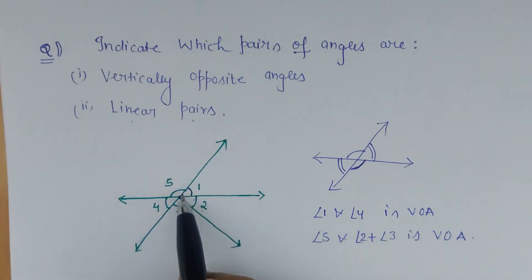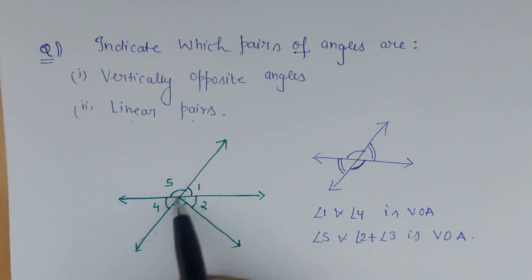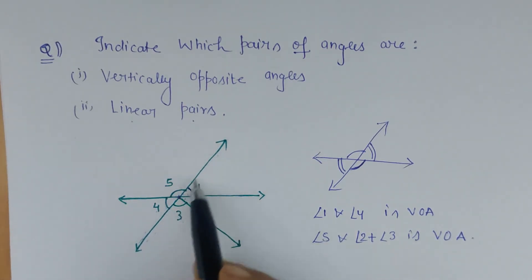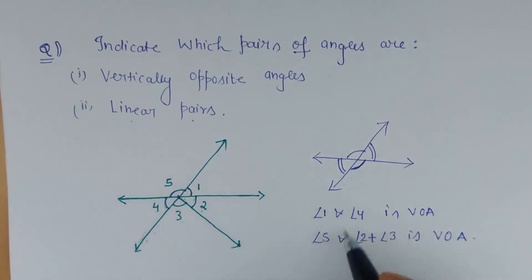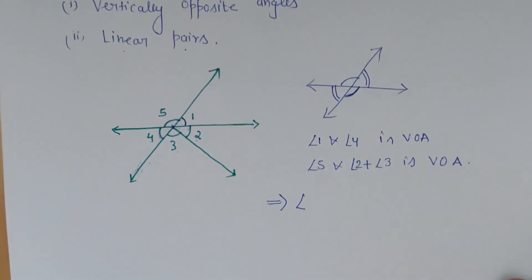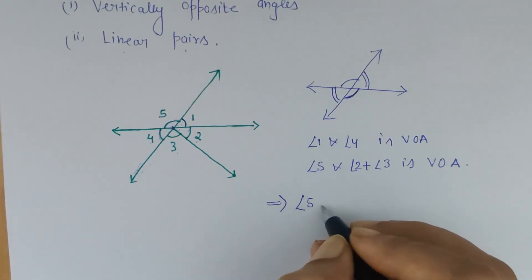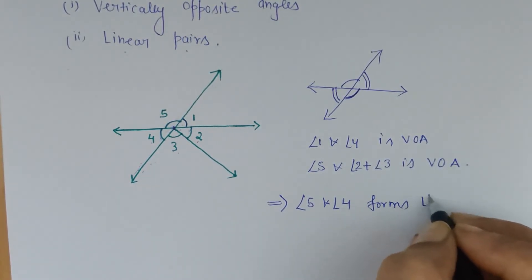They have two arms which are in opposite directions, one common arm, two non-common arms, and a common vertex, and their sum will be 180 degrees — that is why they are called a linear pair. So angle 5 and angle 4 form a linear pair.